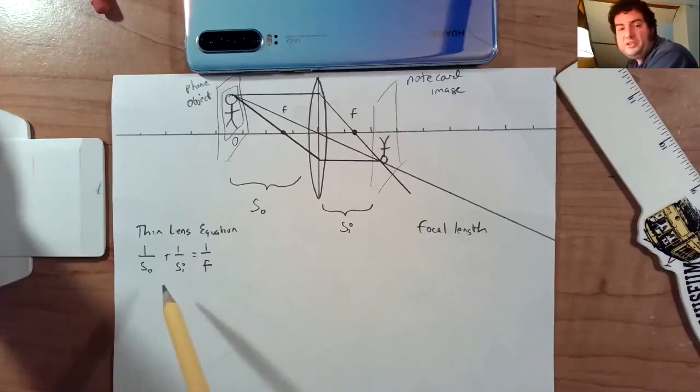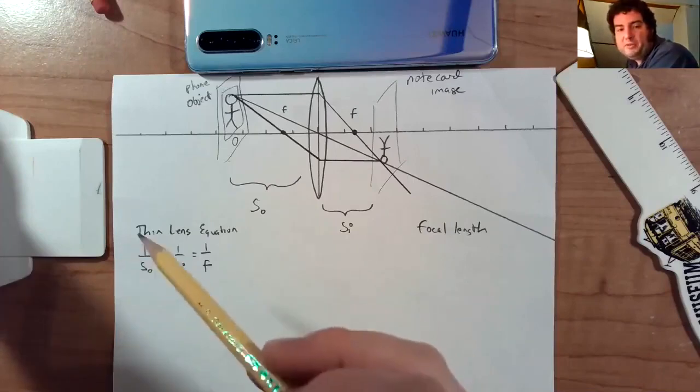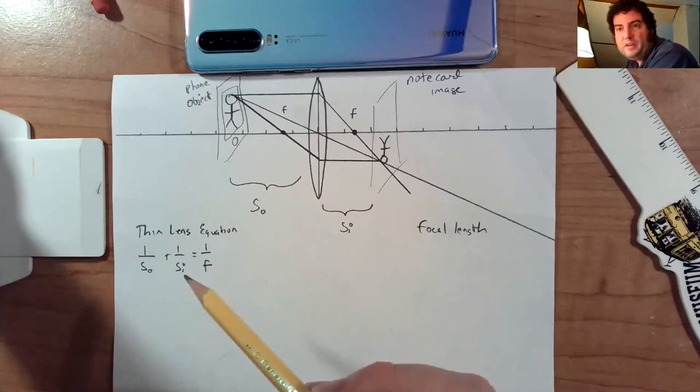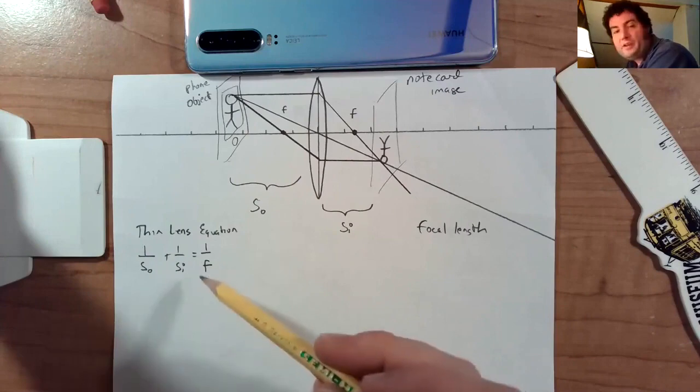So if this equation does indeed describe the relationship between focal length, object, and image distance, we should be able to linearize it. A is a check to see whether it's true and B a way to find the focal length and see if it is indeed five.